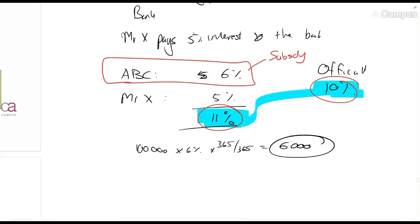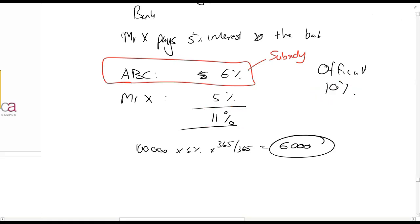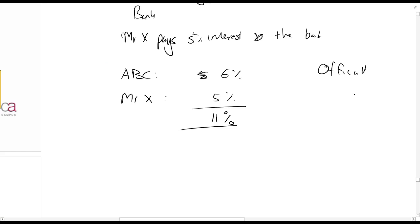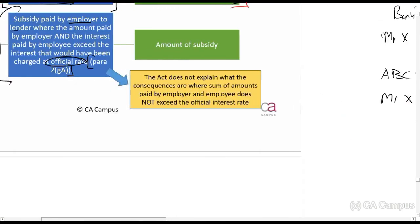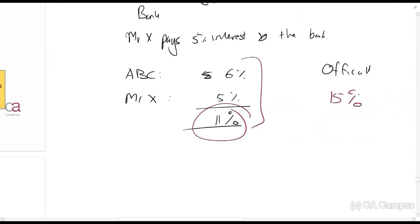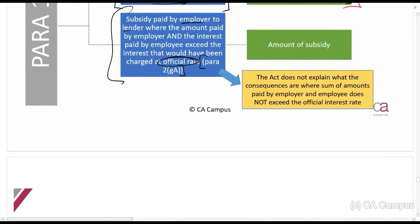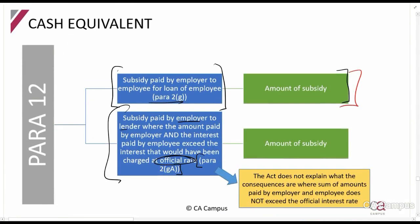What's interesting — and why I said this is a bit of a mess — is that the act tells you what happens when the employer and employee together pay 11 percent and the official interest rate is more than that, say 15 percent. They're paying less than the official rate, but the act doesn't tell us what to do in that case. Basically there is no tax implication then. This is a very specific, very new situation with no examples, and the act seems to be missing guidance for when this section does not apply.